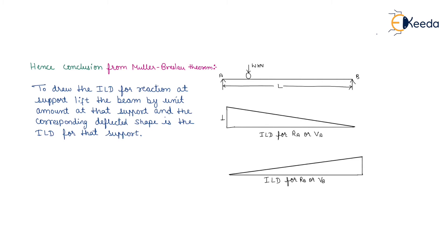The conclusion from the Müller-Breslau theorem states: to draw the ILD for reaction at a support, lift the beam by a unit amount at that support and the corresponding deflected shape is the ILD for that support. So to plot the ILD for reaction at A, lift support A by a unit amount — the resulting deflected shape is the ILD for reaction at A. Similarly, to plot the ILD for reaction at B, lift support B by a unit amount and the deflected shape is the ILD for support reaction at B.